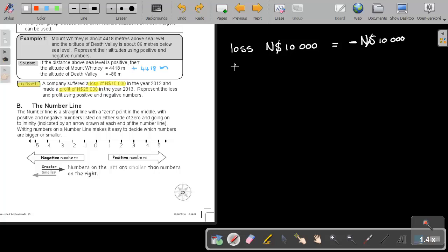And if I say a profit of $25,000, I can represent it either as positive. It's not a problem if you write down the positive.